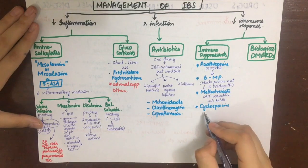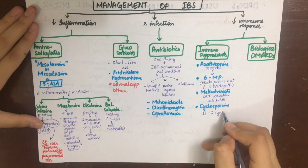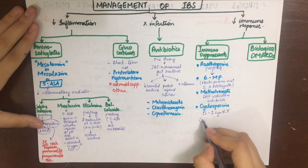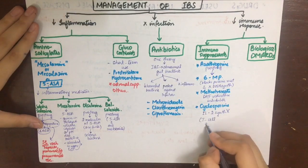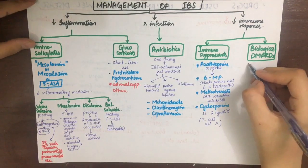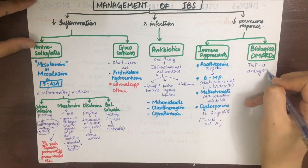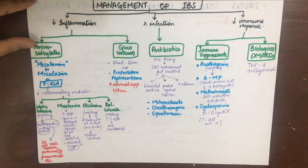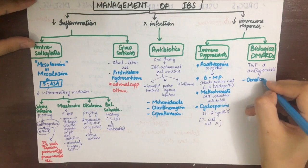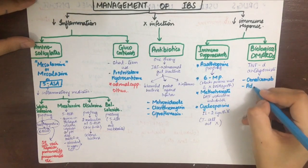Methotrexate is a dihydrofolate reductase (DHFR) inhibitor that suppresses bone marrow and decreases antibody formation. Cyclosporine is an interleukin-2 inhibitor that inhibits T-cell activation.